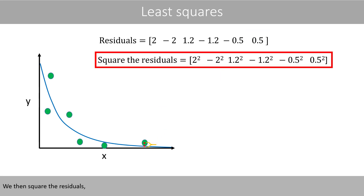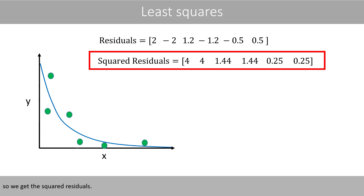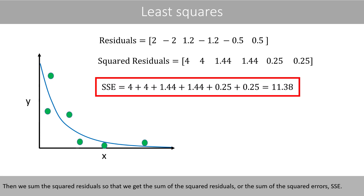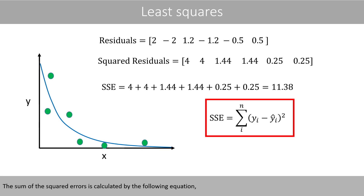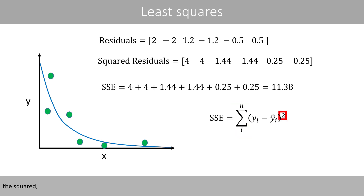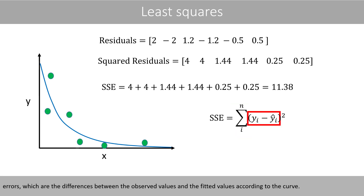We then square the residuals to get the squared residuals. Then we sum the squared residuals to get the sum of the squared residuals, or the sum of the squared errors, SSE. The sum of the squared errors is calculated by the following equation, where we sum the squared errors, which are the differences between the observed values and the fitted values according to the curve.